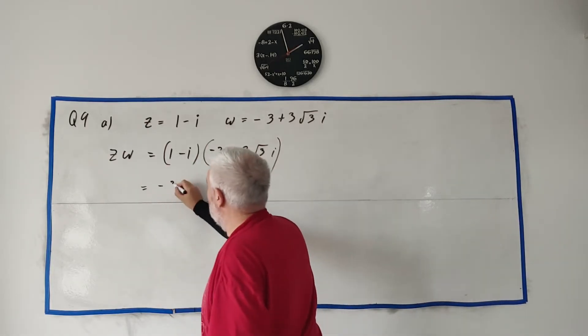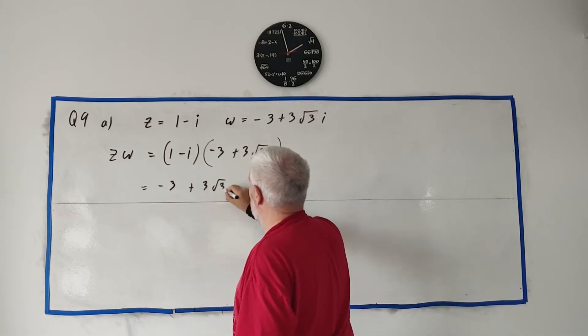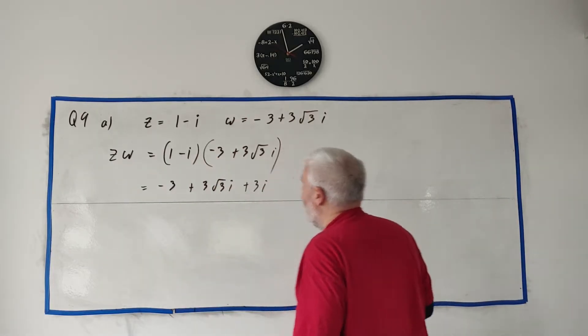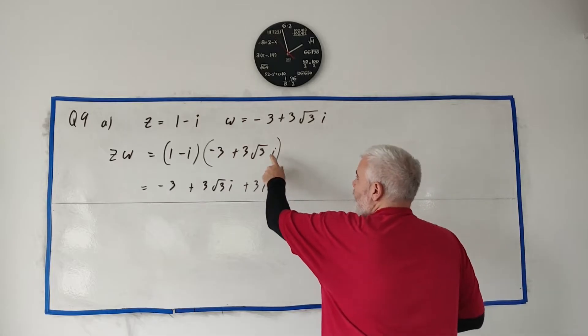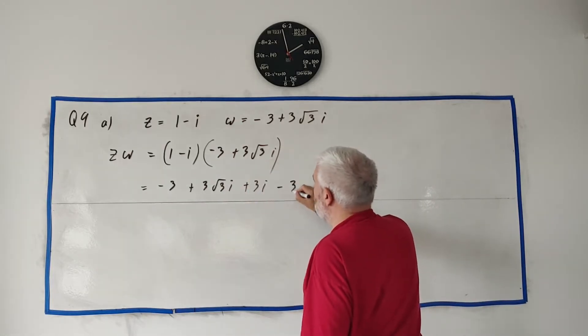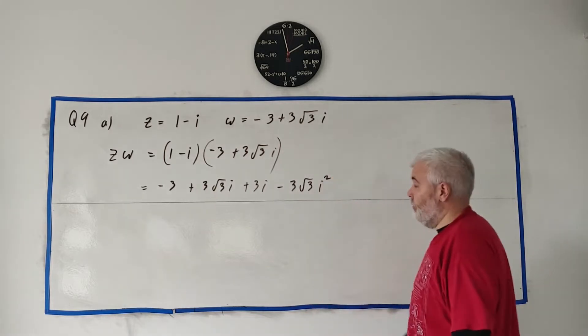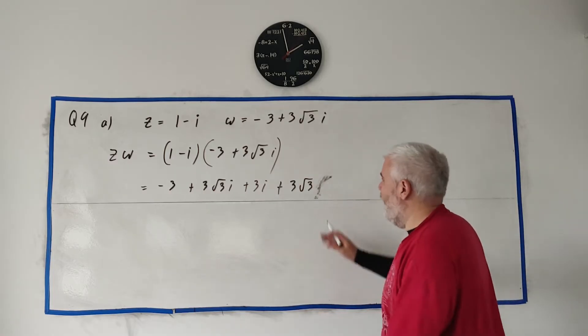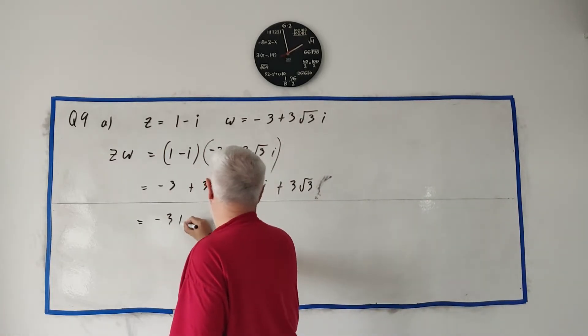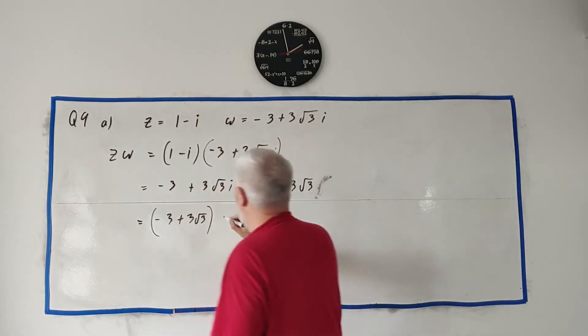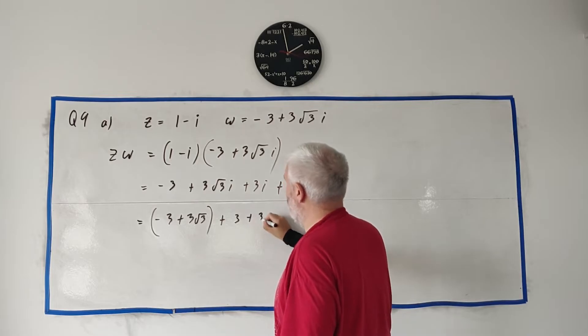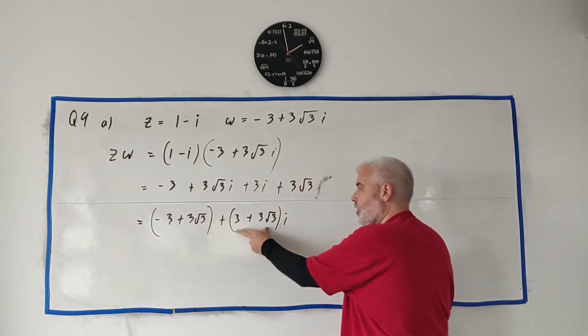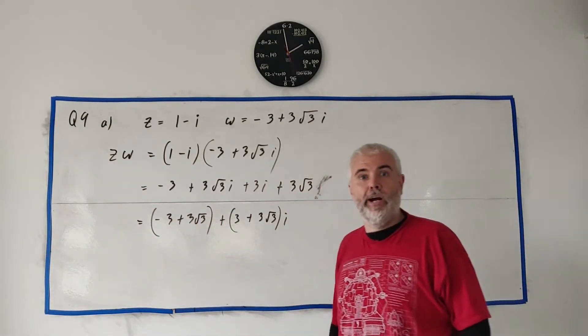For Part A, they simply want us to find Zeta Omega, just multiply them together and give your answer in the form of A plus Bi. It's 1 minus i multiplied by minus 3 plus 3 square root of 3 i. We'll just multiply. 1 times minus 3 is minus 3. 1 times 3 square root of 3 i is 3 square root of 3 i. Minus i times minus 3 is plus 3 i. And minus i times this is minus 3 square root of 3 i squared. But i squared turns into minus 1, so just changes the sign there. So we have a real part, minus 3 plus 3 square root of 3, and an imaginary part, 3 plus 3 square root of 3. That's your one mark for part A.